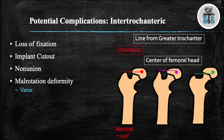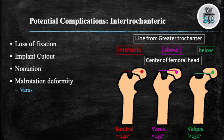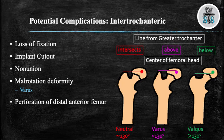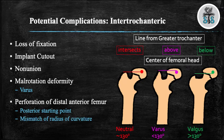If the femoral neck is neutral, the greater trochanter should align with the center of the femoral head. If the femur is in varus, the greater trochanter will be above the center of the femoral head. If the femur is in valgus, the greater trochanter will be lower than the femoral head — remember: valgus and lower. Another complication is perforation of the distal anterior femur, which occurs if you have a starting point that is too posterior, or if there is a mismatch of the radius of curvature between the femoral nail and the femoral shaft.